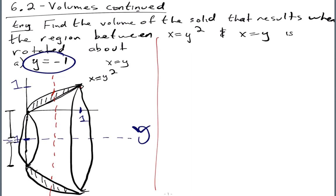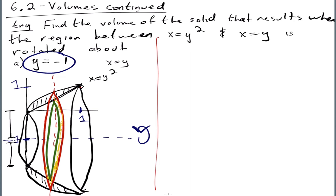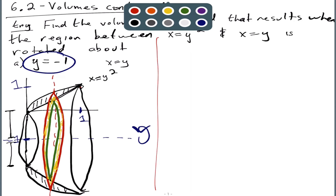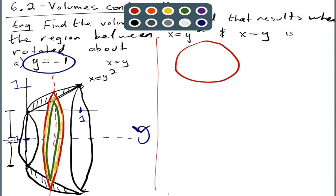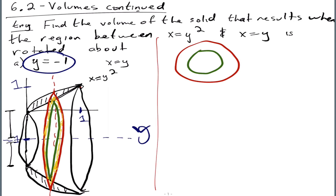If I draw the cross section, it's going to be a circle — and notice it has a hole. The red is the outer, the green is the inner. Drawing it off to the side: that's the outer, and the green is the inner. That's the cross section — the red is outer, the green is inner.